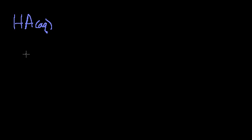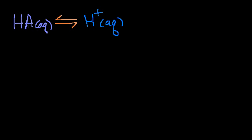Let's say I have a bucket of aqueous solution and it contains some weak acid. We've done this multiple times. It's in equilibrium with its dissociated state — HA aqueous in equilibrium with some hydrogen ions plus its conjugate base, A minus aqueous. The A could be any other kind of molecular group.